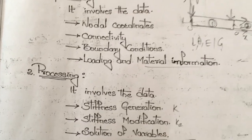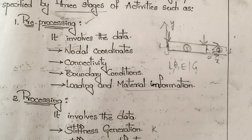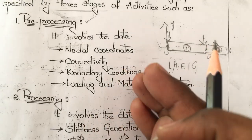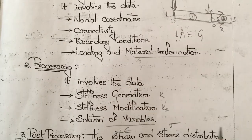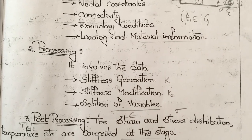Short question: What are the different stages involved in finite element analysis? There are three different stages - pre-processing, processing, and post-processing. This is about the stages in finite element analysis.